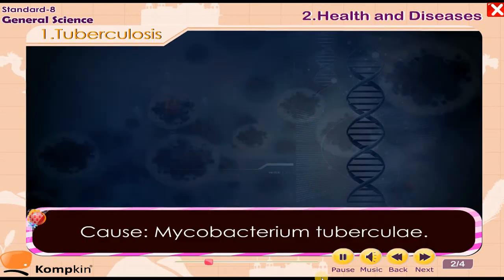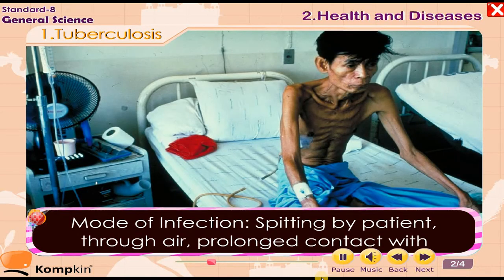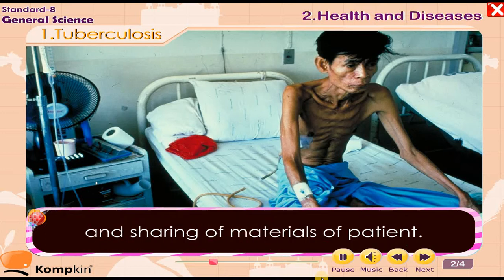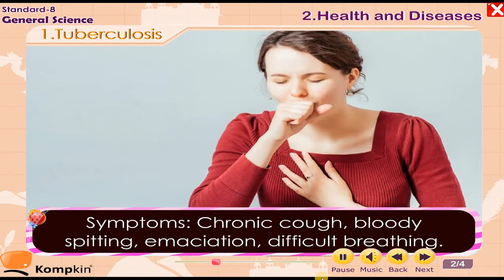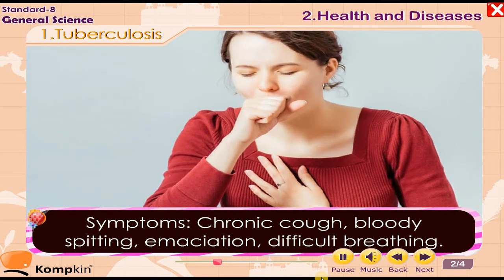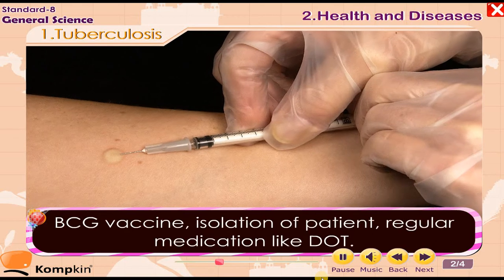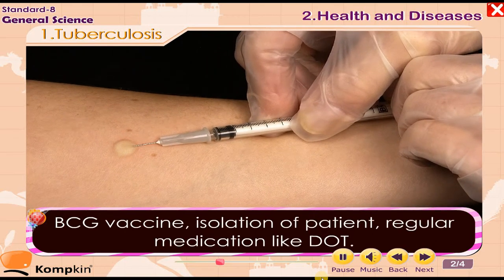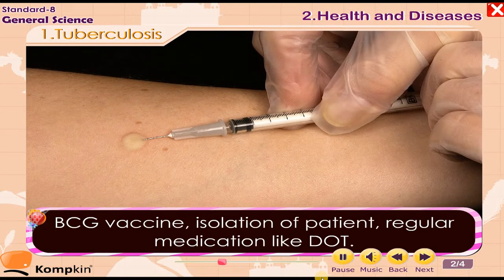1. Tuberculosis. Cause: Mycobacterium tuberculae. Mode of infection: Spitting by patient, through air, prolonged contact with and sharing of materials of patient. Symptoms: Chronic cough, bloody spitting, emaciation, difficult breathing. Prevention and treatment: BCG vaccine, isolation of patient, regular medication like DOT.